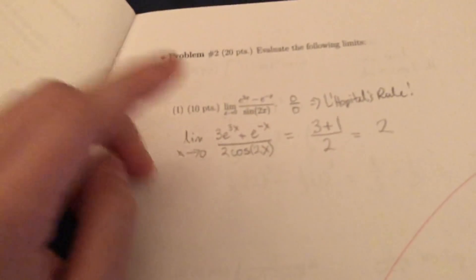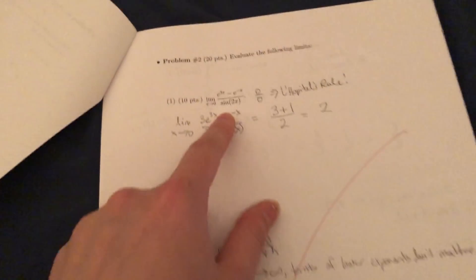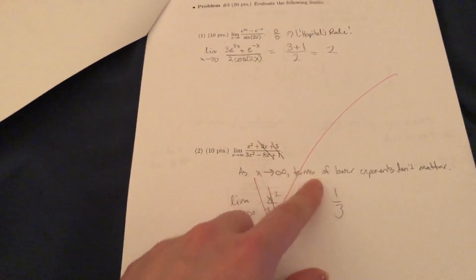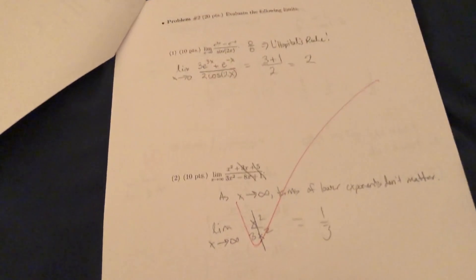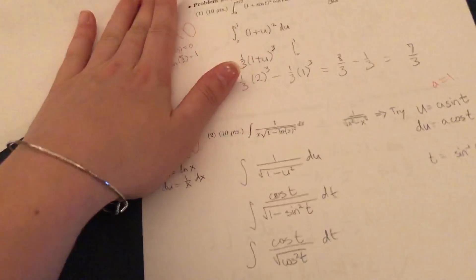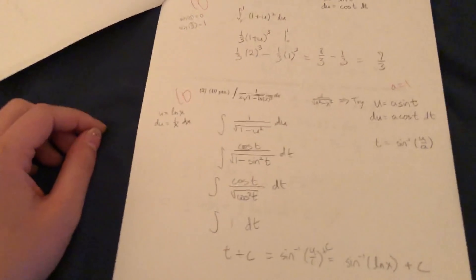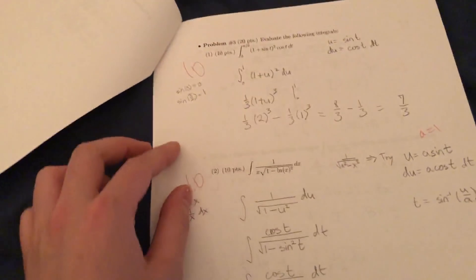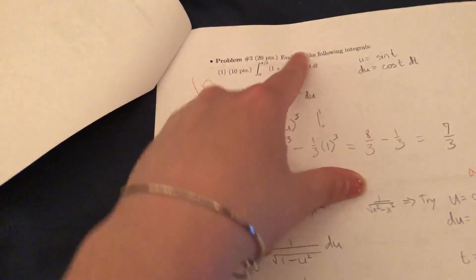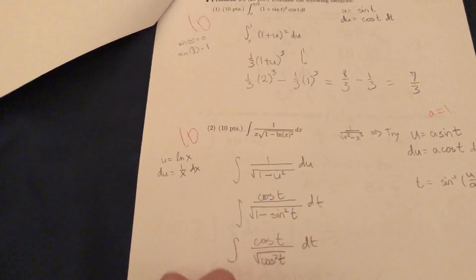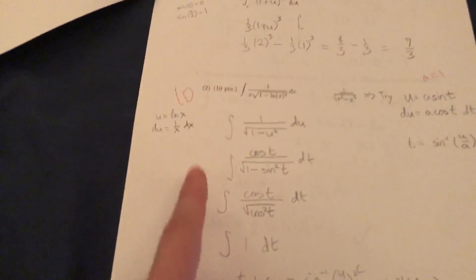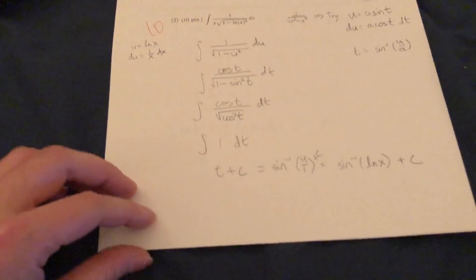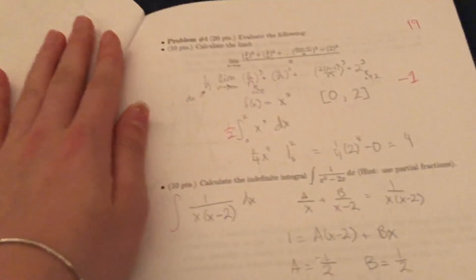Problem two is a limit problem. And it looks like I also got nice points on this one. Limits are usually pretty easy, easier part of it. Problem three. Looks like I got full points on the first three problems. Then we can look at what I messed up on. Yep. Integral, solving integrals. Looks like I did some substitution.